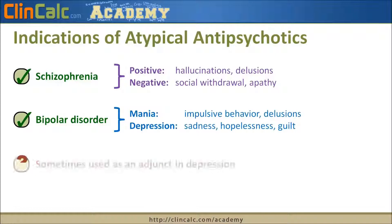In addition to these two indications, some atypical antipsychotics can be used both on and off label as an adjunct in depression or major depressive disorder — not all of them, and it's not used all the time, but they can sometimes be used for that purpose.